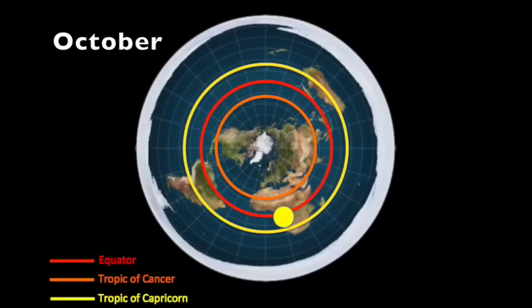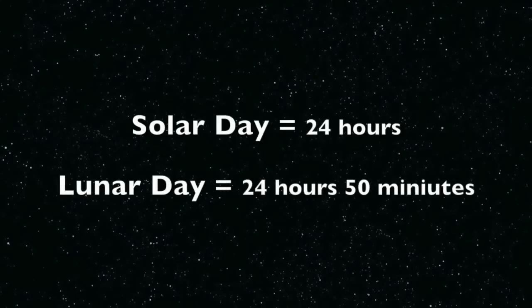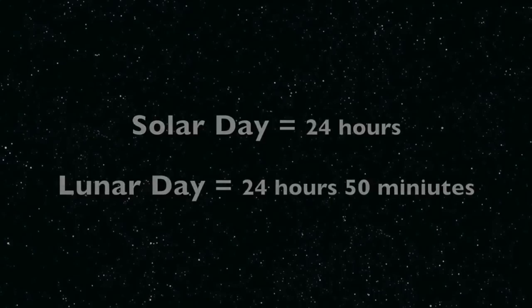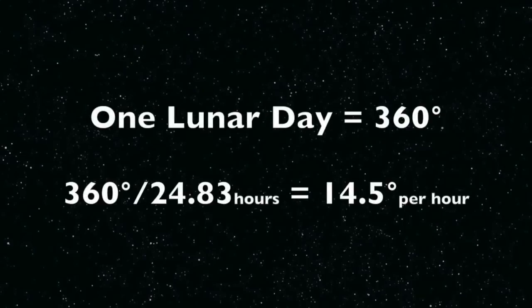Now the moon also circles above the flat earth, but the moon is slightly slower than the sun. The moon takes 24 hours and 50 minutes to circle the flat earth — that's what's called a lunar day. So where the sun takes 24 hours to make one 360-degree circle, which is 15 degrees an hour, the moon takes 24 hours and 50 minutes, which equates to only 14 and a half degrees per hour.